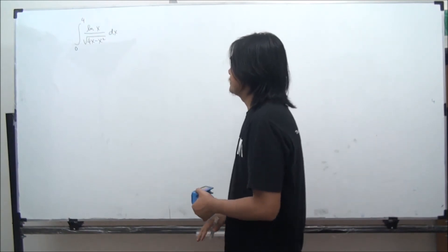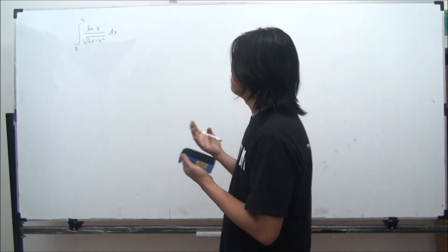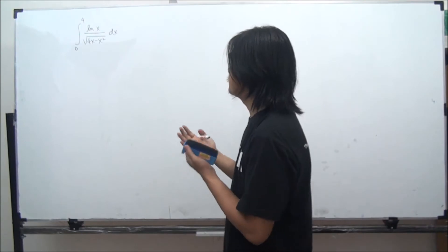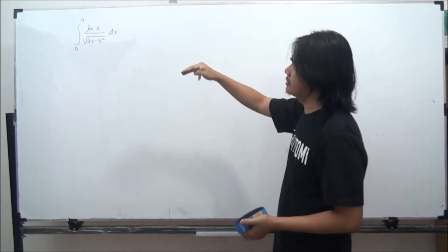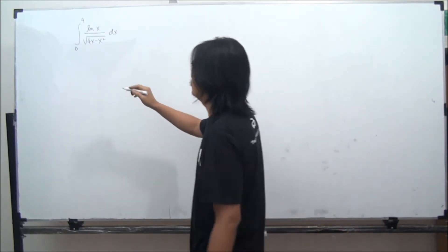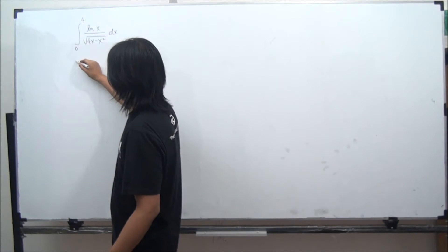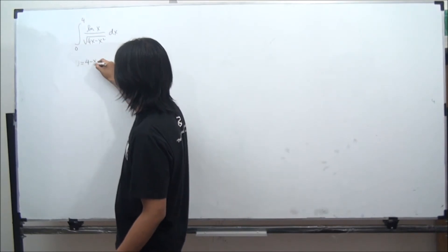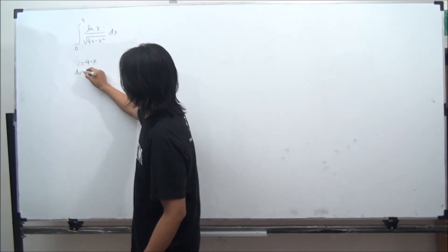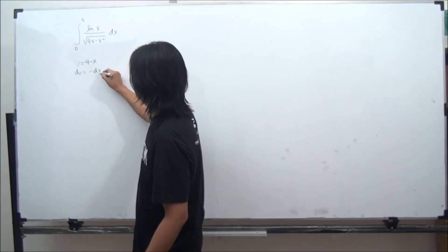Now we are trying to find some symmetry about this integral. So let's write this substitution: u equals 4 minus x. Then we have du equal to minus dx.